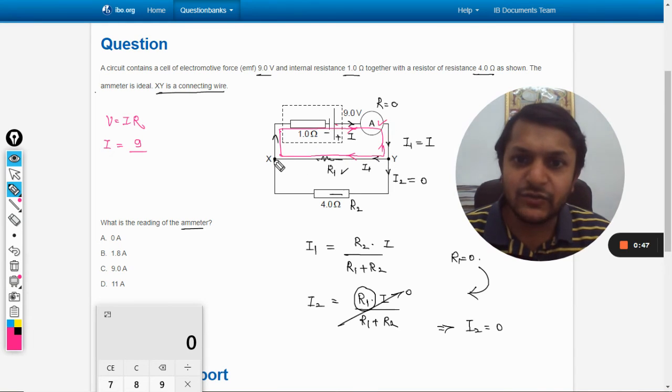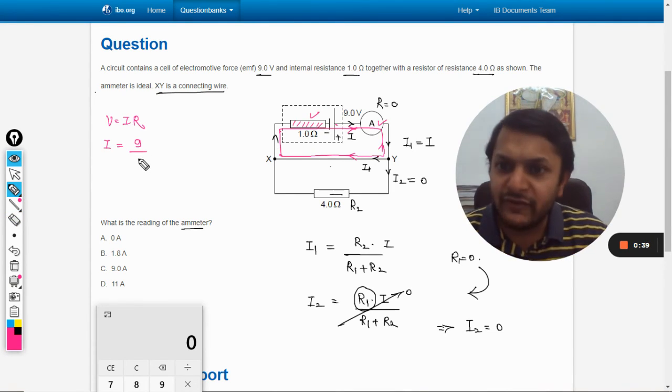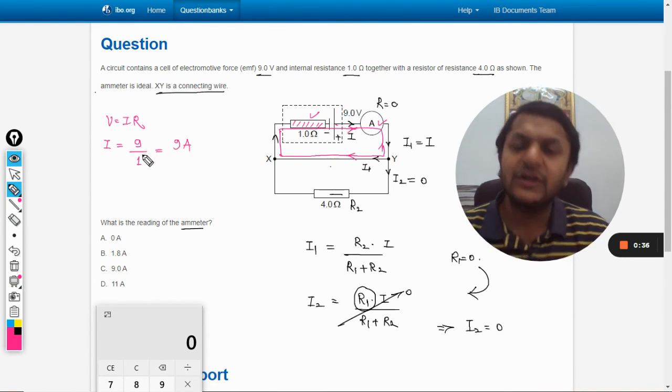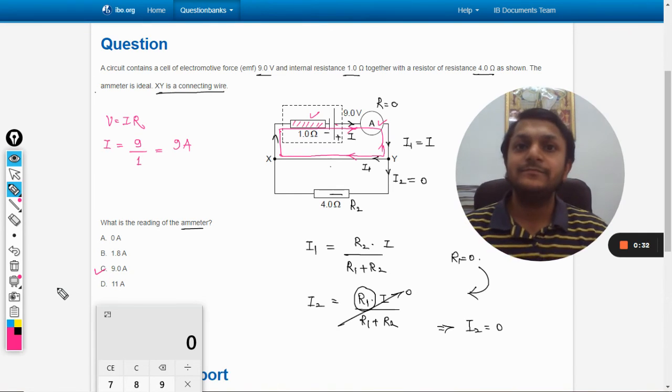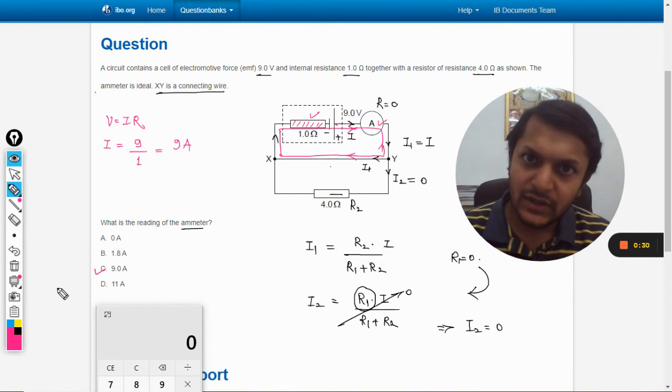So if it is moving from this, ammeter does not have any resistor, XY does not have any resistor. I will erase this, and only resistor is 1 ohm. So I will divide it by 1 and I am getting the answer 9 ampere. So it means our answer should be C.